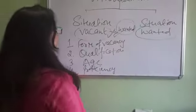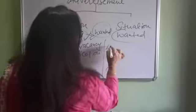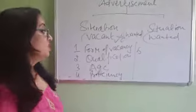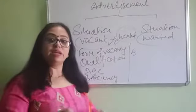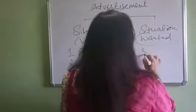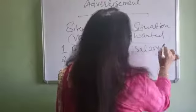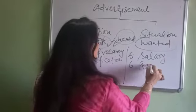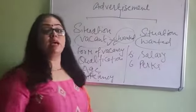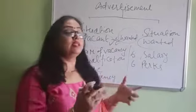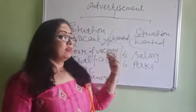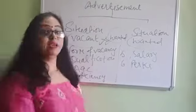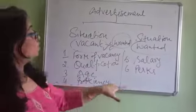After mentioning what they want in the candidate, you mention what they are going to offer. An eligible candidate will get a certain salary — so you mention the salary package they are offering. Along with salary, many companies also mention other perks like residence — whatever they want to give, you mention here.